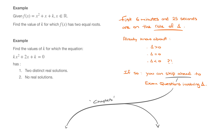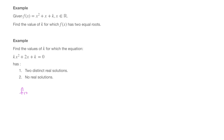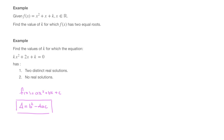Given a quadratic function f of x which equals ax squared plus bx plus c, its discriminant, which we typically call delta, is given by the formula delta equals b squared minus 4ac. Make a note of this formula if you hadn't seen it before — that's the formula for the discriminant delta.